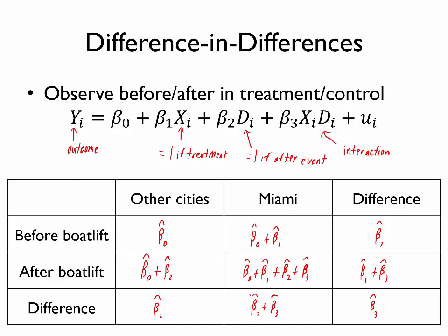At the same time, we might question whether there was some other economic change happening in 1980 that may have affected wages, not only in Miami, but in any place in the country. Well, note that we also have these control cities, these other cities where we've measured a similar difference. So this β̂₂ represents the difference in average wages in these other cities after versus before the boat lift, even though the boat lift didn't occur in those other cities.